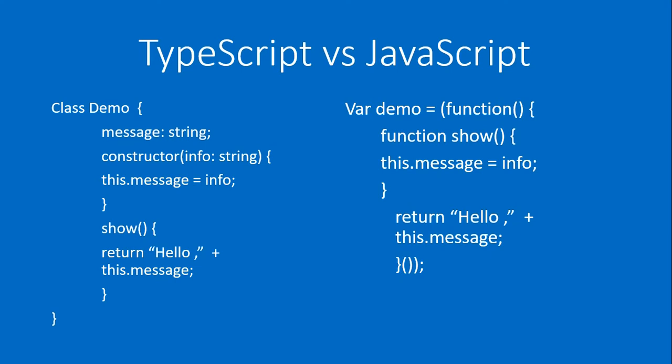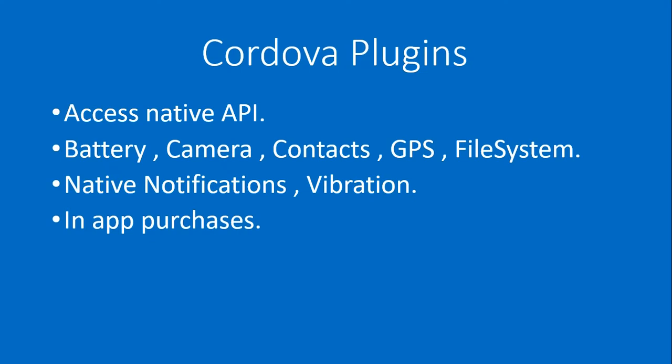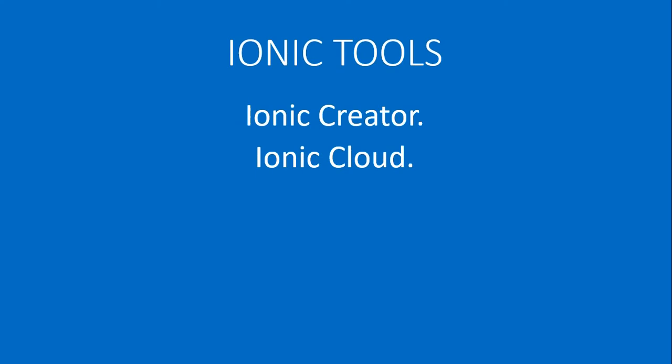Let's move on to Cordova plugins. Cordova has native functionality for all operating systems like Android, iOS, and Windows. You can access the camera and file system of mobiles, and it has a native API. Some available plugins cover battery, camera, contacts, GPS, and file system. There are many more plugins available, including push notifications, vibration, and in-app purchases.